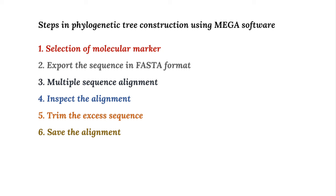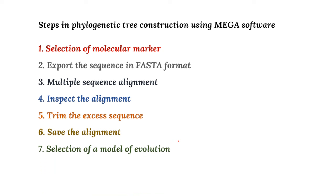Save the alignment in FASTA format or MEGA format — both are acceptable. For online phylogenetic tools like ClustalW or Clustal Omega, save in FASTA format; for MEGA software, save in MEGA format. Then select the phylogenetic tree type and model — different models are available. Select whichever is preferable for your data construction. Finally, assess the reliability of the tree using the bootstrap method.